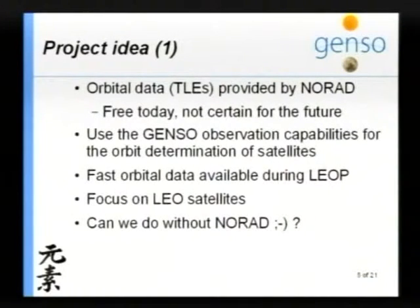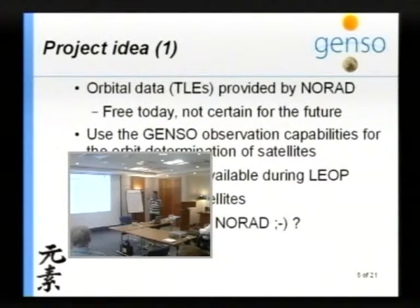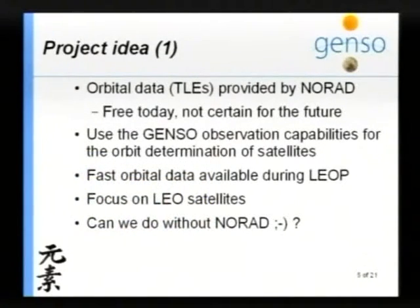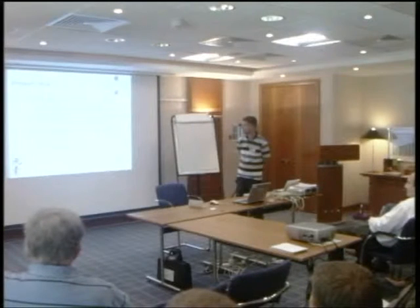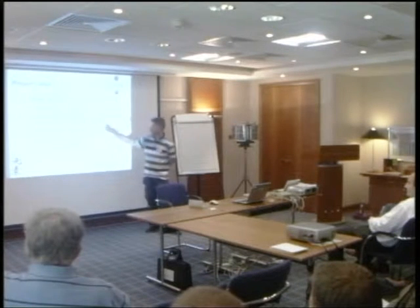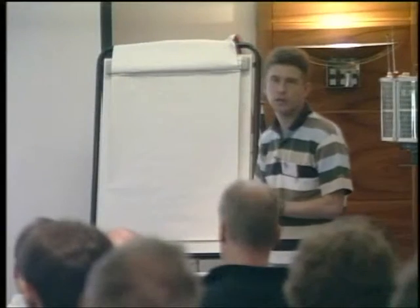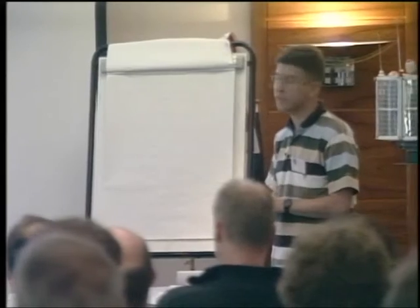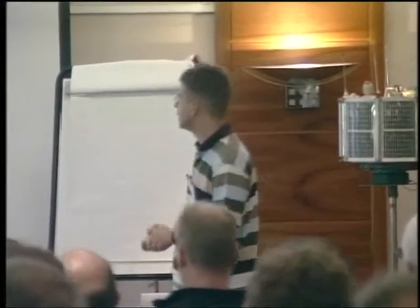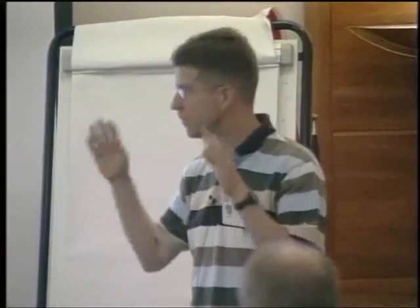What's the project about? The orbital data — the two-line elements — are provided by NORAD these days. They're free today, but not certain in the future. The idea is to use the GENSO observations, the capability of GENSO, for performing orbit determination of those satellites. It's also important whether GENSO can provide fast orbital data during launch and early operations. Normally it takes one or two days for NORAD to release the first TLEs, and hopefully GENSO can do better. We focus on LEO satellites, and the main question is: can we do without NORAD?